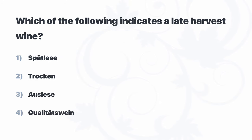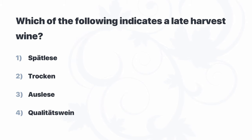Speaking of late harvest, which of the following indicates a late harvest wine? Spätlese, Trocken, Auslese, or Qualitätswein? With what we've learned about Germany, we can quickly set aside Qualitätswein, since that's a simple title for PDO-level wines. And if we remember that Trocken means dry, we can set that one aside as well.